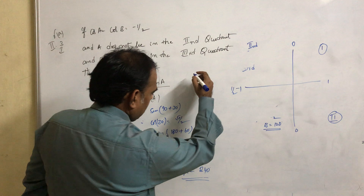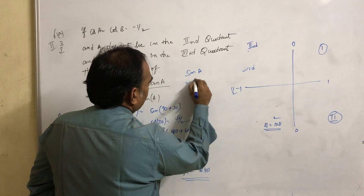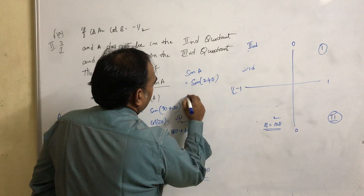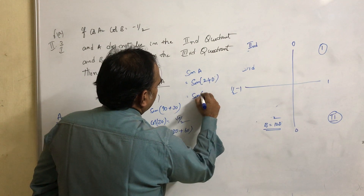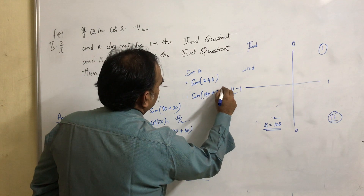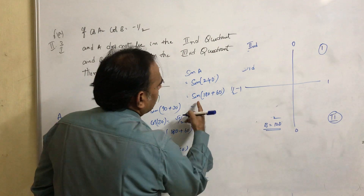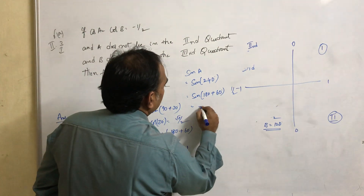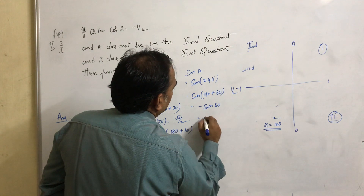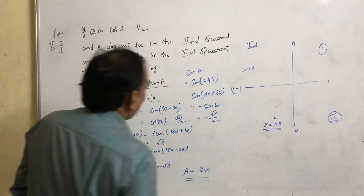Now compute sin a. Sin a equals sin 240. 240 can be written as sin(180 + 60). Sin(180 + 60) is in the third quadrant, where sin is negative. So this equals minus sin 60, which equals minus root 3 by 2.